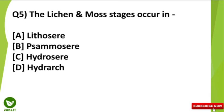The next question is: the lichen and the moss stages occur in which of the following stages? This question is regarding ecological succession.